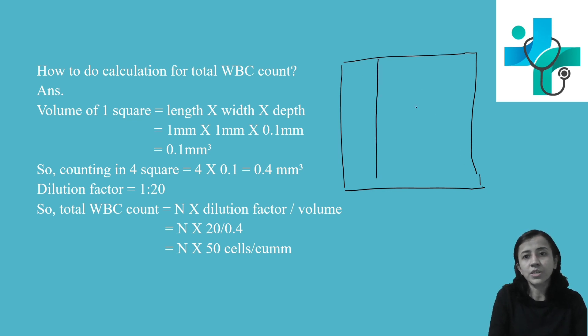Here you can see it has got nine squares. They should be equal, though I'm not drawing them properly, but they all are equal. This is one millimeter by one millimeter, one millimeter, and this is also one millimeter by one millimeter. So these four corner squares are WBC counting areas.